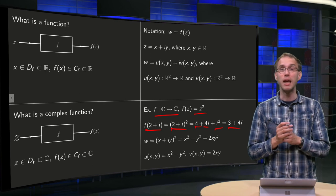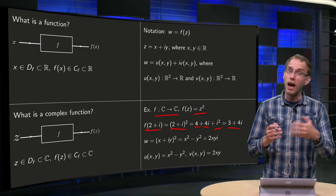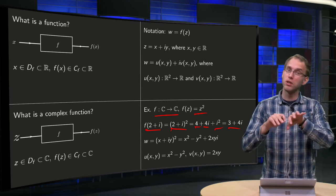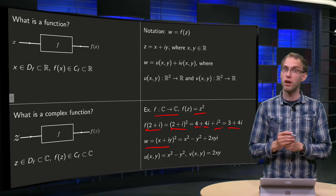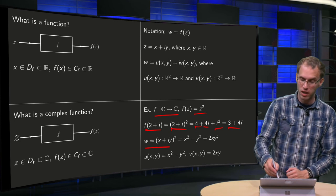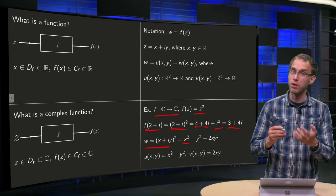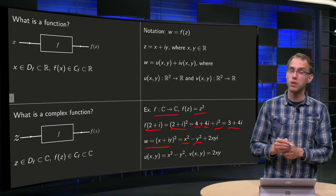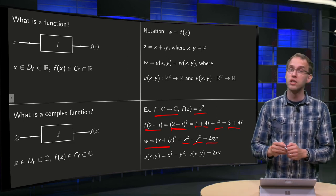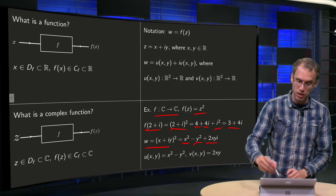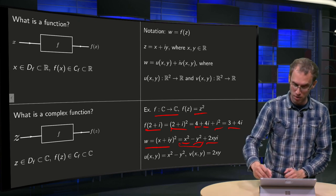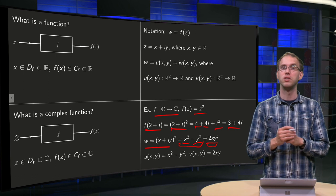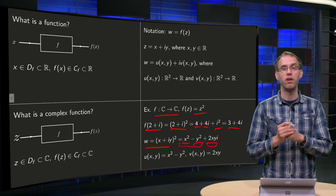That's how you find the image of a number. If we want to split it into real and imaginary parts, we write w equals (x plus iy) squared. Working out the brackets, we get x squared plus i squared y squared, so minus y squared, plus 2xy times i. We see that the real part u equals x squared minus y squared, and the imaginary part v equals 2xy.